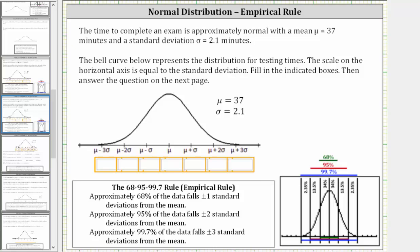The time to complete an exam is approximately normal with a mean of 37 minutes and a standard deviation of 2.1 minutes. The bell curve represents the distribution for testing times. The scale on the horizontal axis is equal to the standard deviation. Fill in the indicated boxes, then answer the questions on the next page.